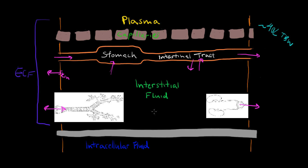Plasma is typically 3 liters, which is about 8% of total body water. Interstitial fluid is 12 liters, which is about 25% of total body water. And the intracellular fluid is 25 liters. Keep those numbers in mind.